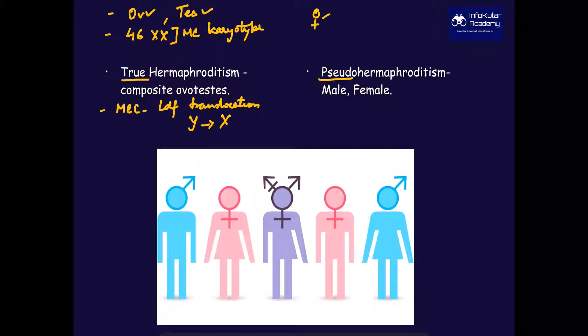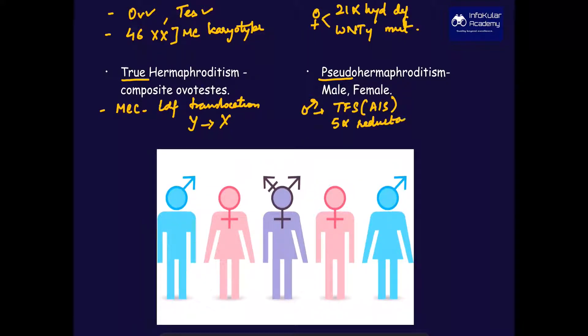Pseudohermaphroditism can be of male and female types. The female causes are 21-alpha hydroxylase deficiency and WNT4 mutation.